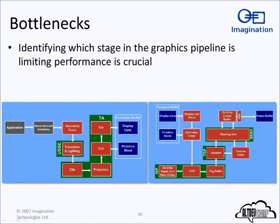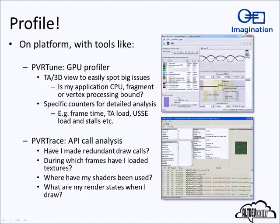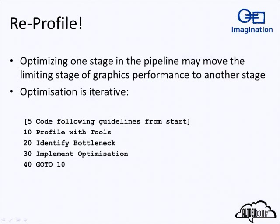Profile your application. We provide PVRTune profiler and PVRTrace, an API analysis utility, freely available. Other manufacturers have profiling tools too — Apple have their own. Use these from a very early stage to see what's happening in your core. If a particular part of the pipeline is at 100% load, that's where you need to concentrate your effort. It's also important to re-profile, because once you've sped up a bottleneck, another part of the pipeline may now be holding you back — so follow this iterative procedure.